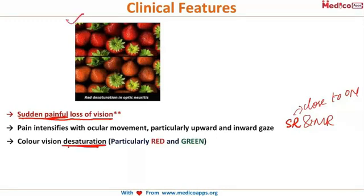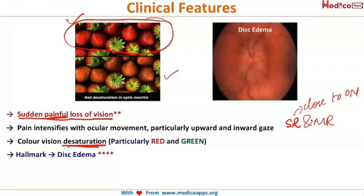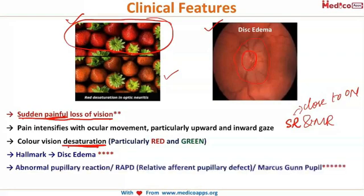Another striking feature is color desaturation. Whereas a normal person sees bright red and green strawberries, a patient with optic neuritis perceives the colors as faded. The hallmark of the disease, however, is disc edema. On fundoscopy, the optic disc margins are indistinct and the disc appears markedly swollen, unlike the well-defined disc seen normally.